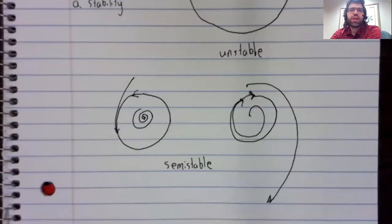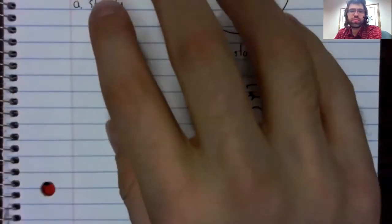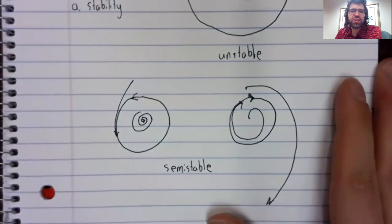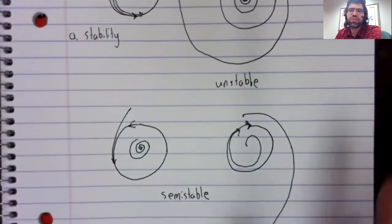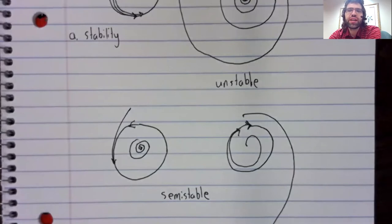Unfortunately, classifying orbits like this is outside of the scope of this class. Because to classify orbits, you need the tools of discrete dynamical systems. A completely different, although related field of mathematics from differential equations.